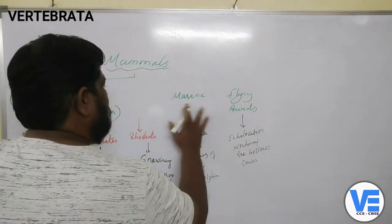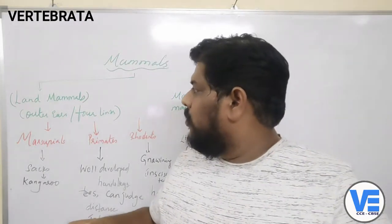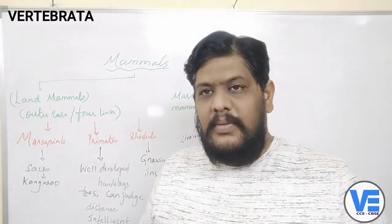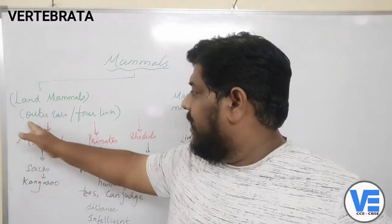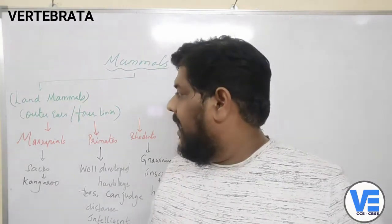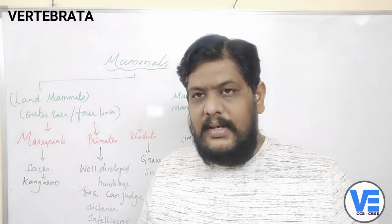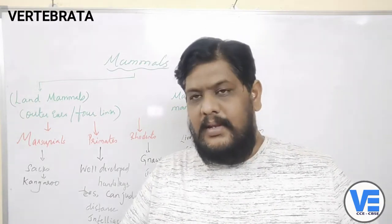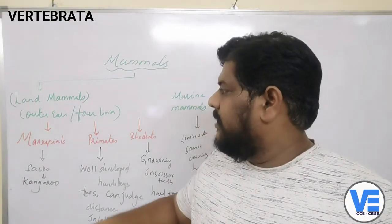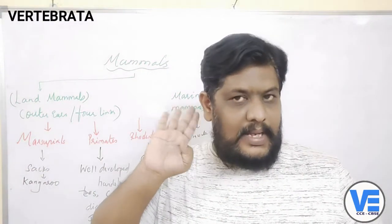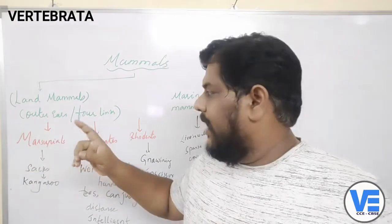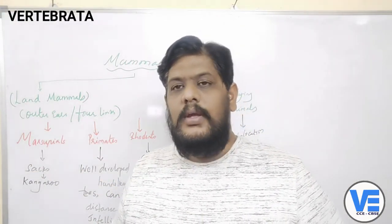When you come to the mammals, especially the land mammals, how can you identify that an animal is a mammal? The best way to identify it as a mammal is that it has outer ears and also four limbs — hands and legs. The ears will be visible externally; they have external or outer ears. And they have four limbs.